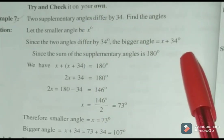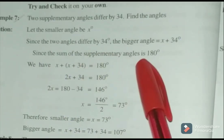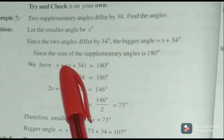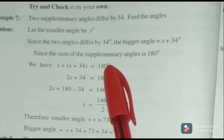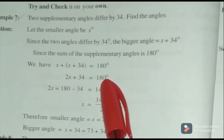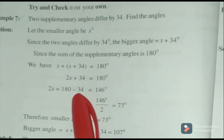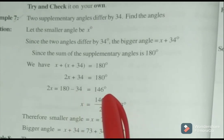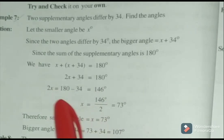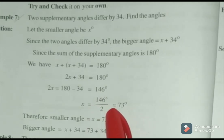Since the angles are supplementary, their sum equals 180 degrees. So X plus X plus 34 equals 180, giving 2X plus 34 equals 180 degrees. Transposing 34 to RHS: 2X equals 180 minus 34, which is 146 degrees. Therefore X equals 146 divided by 2, equal to 73 degrees.